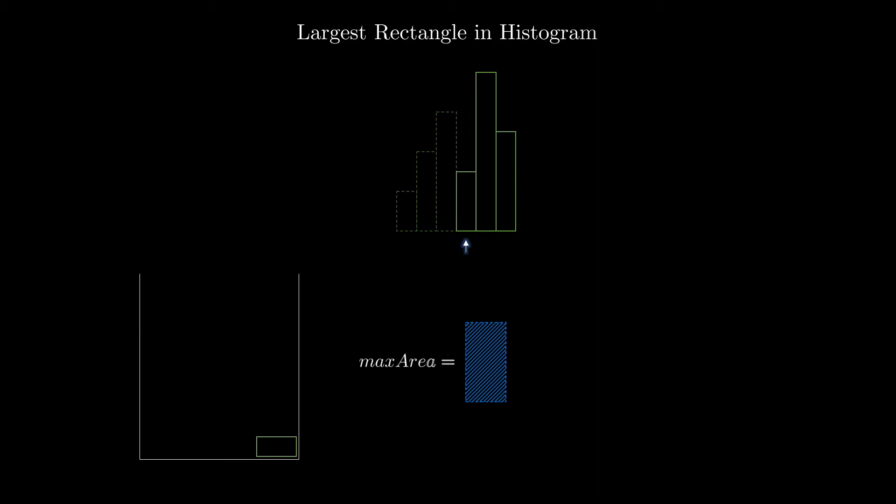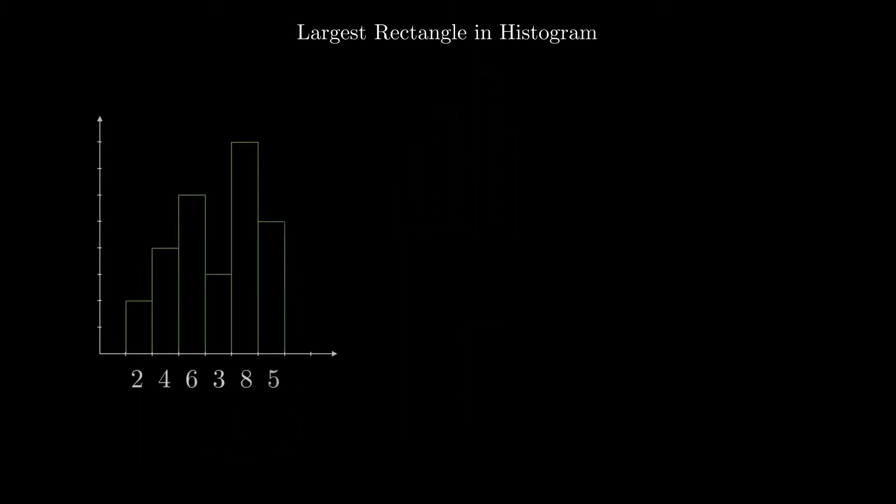The stack top element is now smaller than the current element, so we push the current element on the stack, increment the counter and repeat the same process again. Since we have an understanding of the core logic now, let us see how to write code for this problem.